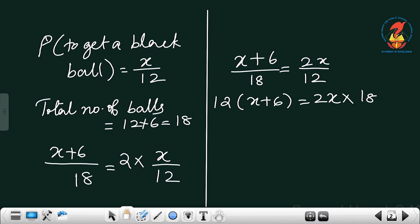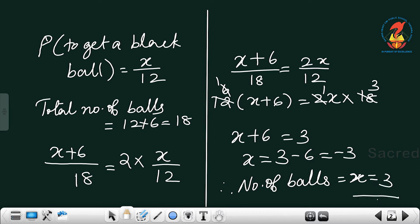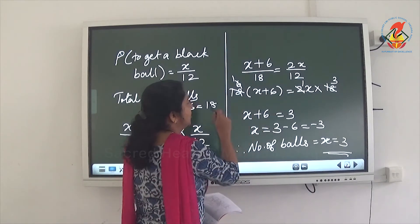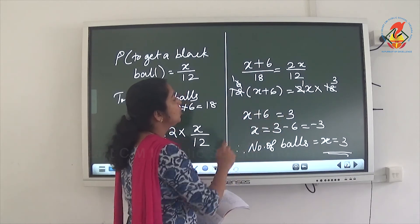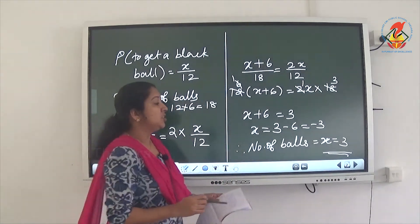So we set up the equation: (X + 6) / 18 = 2 * (X / 12). Cross-multiplying: 12 into (X + 6) = 2X into 18. Simplifying by cancelling — 12 and 2 cancel to give 6, and 18 and 6 cancel to give 3 — so X + 6 = 3X, giving X = 3. Since this is a number of balls, X is equal to 3.